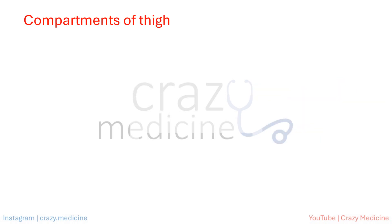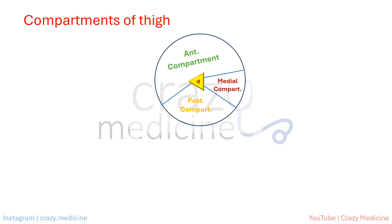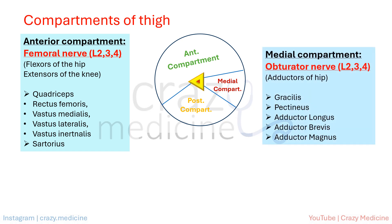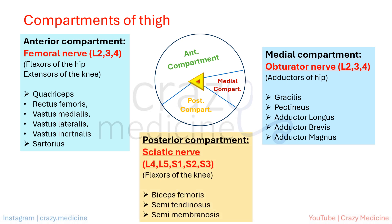First, the compartments of the thigh. Anatomically, the thigh has anterior, posterior, and medial compartments. The anterior compartment includes flexors of the hip and extensors of the knee, which are supplied by the femoral nerve. The medial compartment includes adductors of the hip, supplied by the obturator nerve. The posterior compartment includes flexors of the knee, supplied by the sciatic nerve. This concept and knowledge of anatomy is very important for understanding the clinical approach.